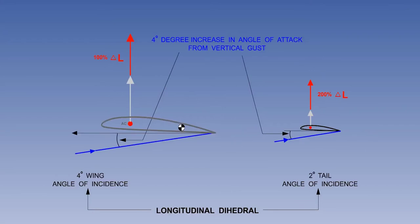The designers ensure the tailplane can always generate the appropriate stabilising moment by attaching the tailplane at a smaller angle of incidence than the wing. This is called longitudinal dihedral. The illustration shows a wing incidence of 4 degrees and a tailplane incidence of 2 degrees. If a gust increases the angle of attack by 4 degrees, the change in wing lift will be 100%, whereas the change in tailplane lift will be 200%.